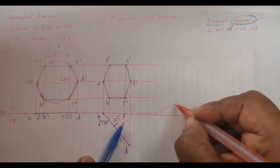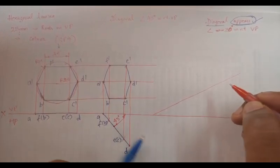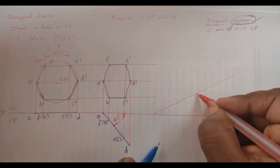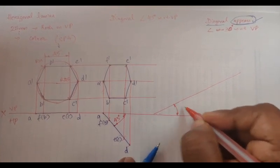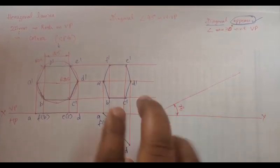So we are going to draw the diagonals. That is going to be inclined 30 degrees. This is going to be with respect to HP. Take it, cut an arc.